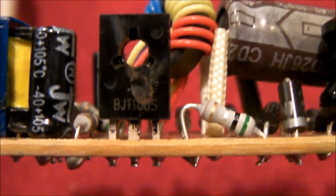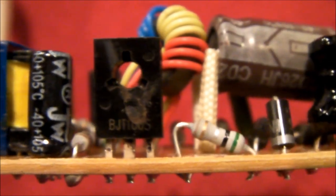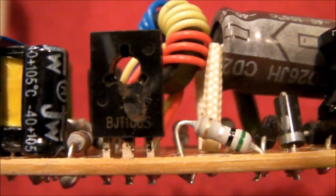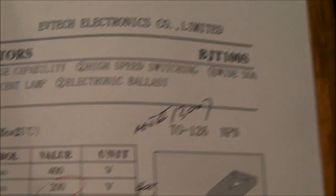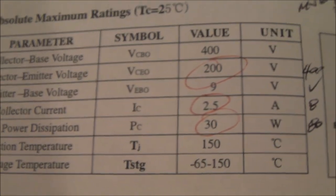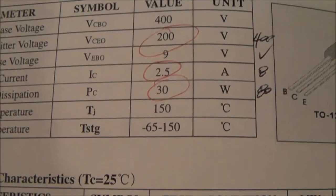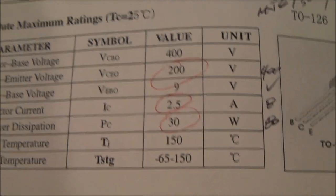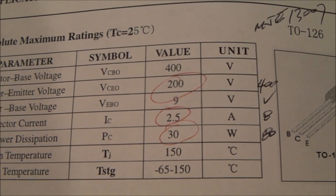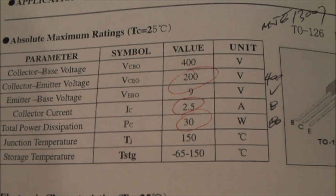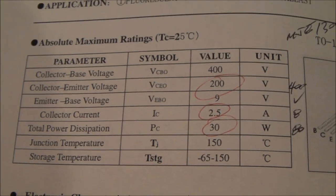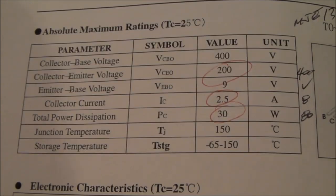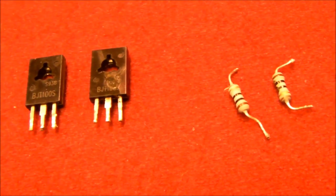It looks like the transistor is part number BJT100s. Here's the spec sheet for the BJT100s. I'm just going to replace it with a transistor that's got a little bit higher power rating to give it more safety factor, and I'll try to find a resistor that's also got a little bit higher power rating, and we'll see whether that fixes the problem.